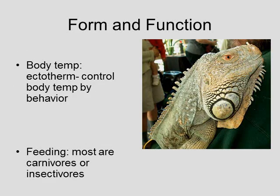Reptiles are ectotherms — 'ecto' means outside. Unlike us, they don't have much control over their body temperature; their bodies do not produce a lot of heat, so they control their body temperature through behavior. If a reptile is too hot it may go into shade or dig a burrow; if it's too cool it may go out and sun itself. If you've had a reptile as a pet, you know you need heat lamps, heat rocks, and a cool part of the cage.